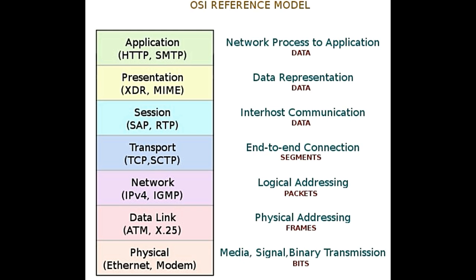Application layer: It is said to be the closest layer to the user. It is through this layer that a user can interact with the software application that will aid in the data transfer. Its main functions are identifying the user who wants to communicate, determining whether the data and network sources are available, and synchronizing the communication between the two users. Its actual implementations include File Transfer Protocol (FTP), Telnet, Simple Mail Transfer Protocol (SMTP), etc.